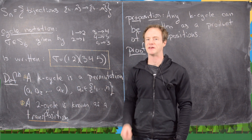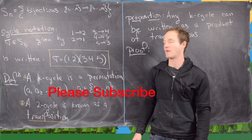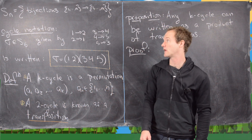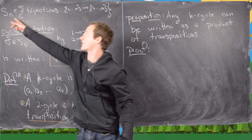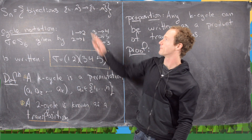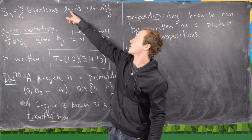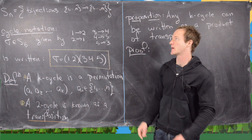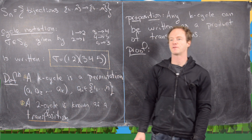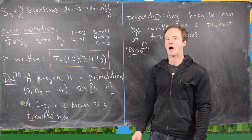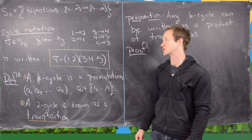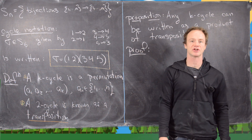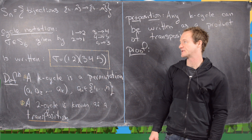In this video we want to look at the symmetric group and different ways that we can classify elements of the symmetric group. The symmetric group on N letters, generally called Sn, consists of bijections from the set 1 through N to the set 1 through N. Since they're bijections from one set to itself, that forms a group under the operation of composition of functions. Let's also recall that we have cycle notation for writing elements of the symmetric group.